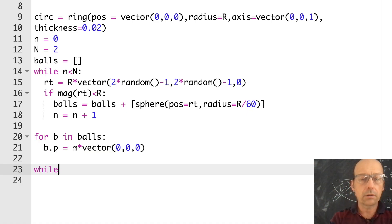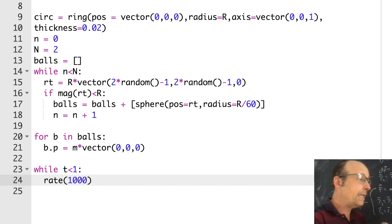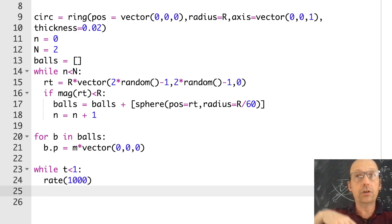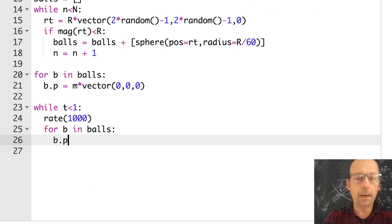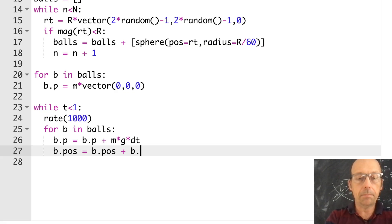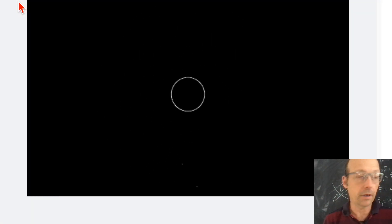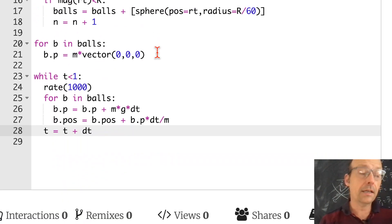No collisions. So while t is less than 1, rate 1000. So rate in Web VPython says don't do more than 1000 calculations per second. So it will run in real time if I have dt of 0.001. Okay. So the first thing I want to do is just to update the momentum of each ball. So for b in balls, b.p is b.p plus m times g times dt. Right? m g is the force. So f dt. Now I'm going to update the position. b.pos is b.pos plus b.p times dt divided by m. And then I can update time. I only ran it for a second because they're just going to fall right through that circle. There we go. So that's good.